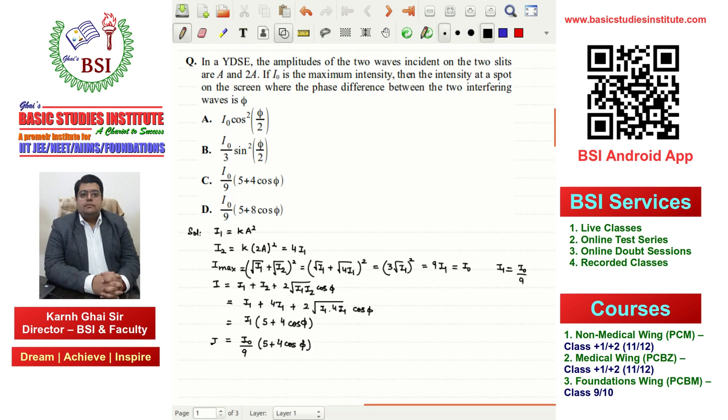This is given in option C: I0/9 times (5 + 4cos(φ)). The correct answer to this question is option C.